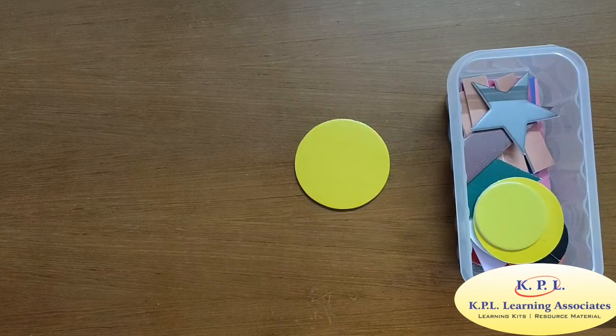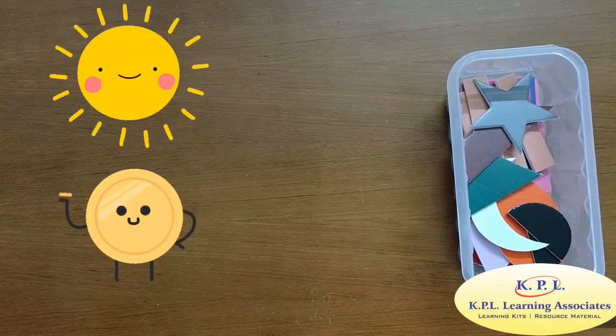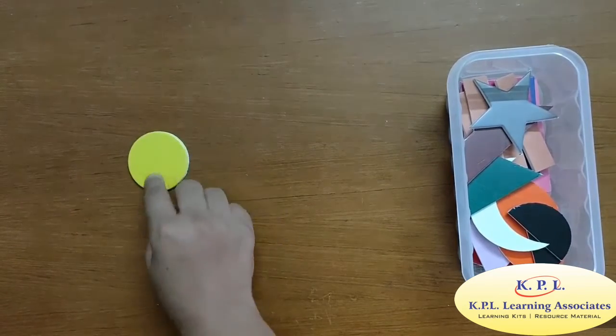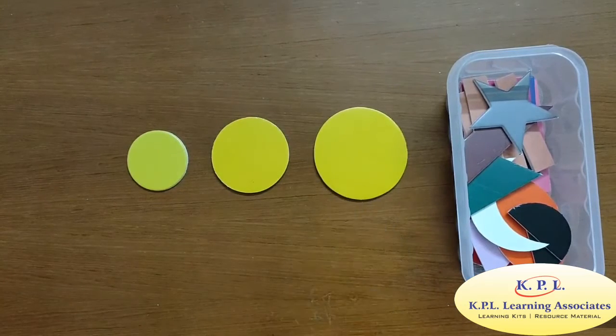This is a circle. It has no sides. Examples of circle are sun, button. Size gradation with circles: small, bigger, biggest.